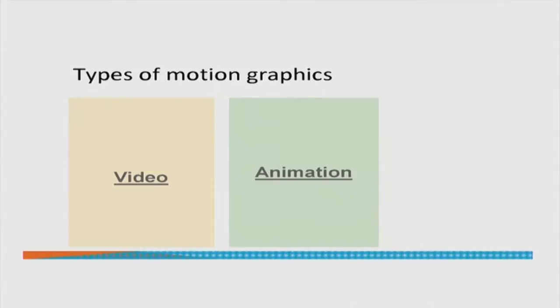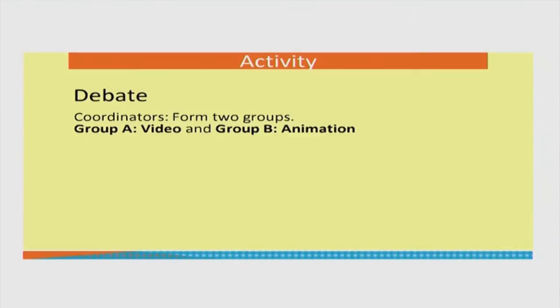So we have seen two types of motion graphics. In one case we saw a video of an experiment being performed — it had advantages of showing a real procedure. In another case we saw an animation of the internals of a particular machine. What we want to do now is think about when each of these two types is appropriate. Let us say we have two groups in each center — this is also a good activity to perform immediately after lunch.